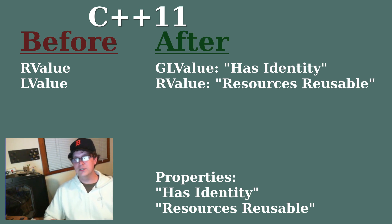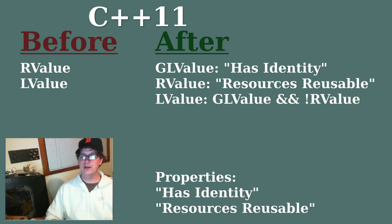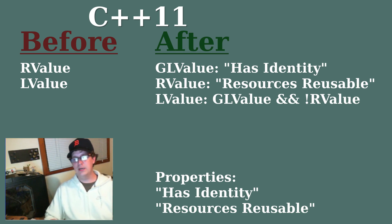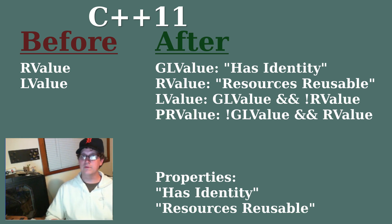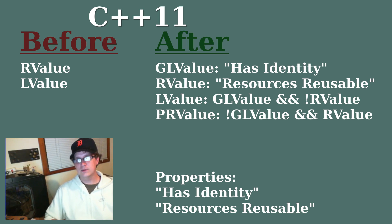This is where a little bit of the confusion comes in. Where we had L value and R value in the past, the higher level categories GL value and R value are the two that are at the same level. L value refers to a GL value that is not an R value. That is to say an L value has an identity but we can't reuse its resources. For a value that is an R value but not a GL value we have the term PR value. That is to say this value is about to see the end of its lifetime and we can reuse its resources if possible, but this value does not have an identity associated with it.